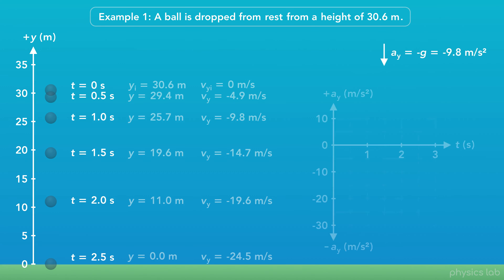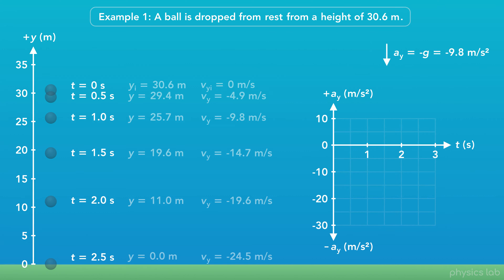Finally, what would the acceleration graph look like? The horizontal axis is time and the vertical axis is acceleration in meters per second squared. In this course, we only deal with constant acceleration. In projectile motion, the acceleration versus time graph is a constant negative 9.8 meters per second squared the entire time — negative because we chose up to be positive. Acceleration as a function of time is just a constant value; the variable t doesn't appear because acceleration does not depend on time.